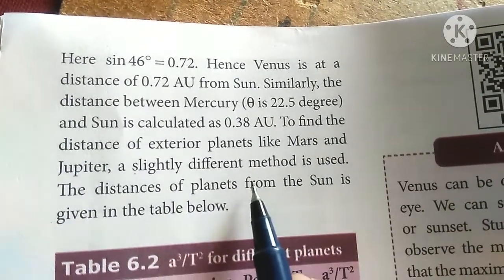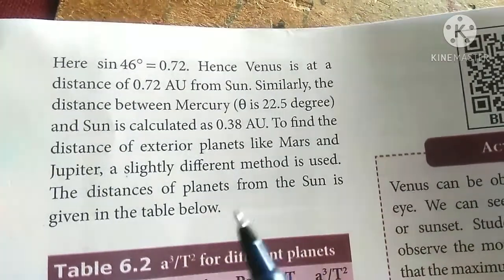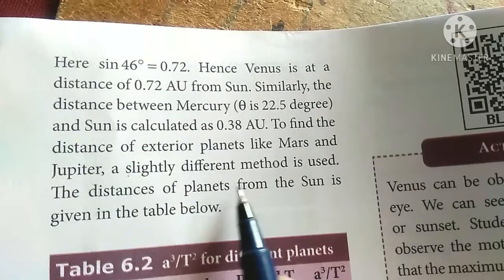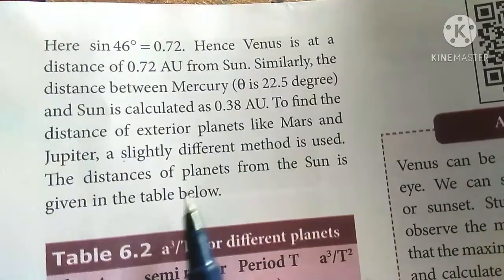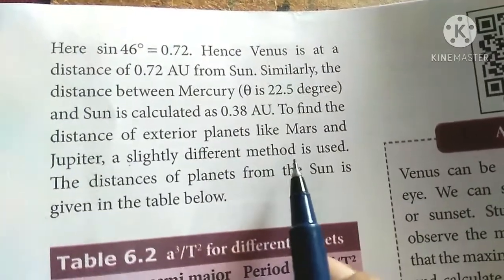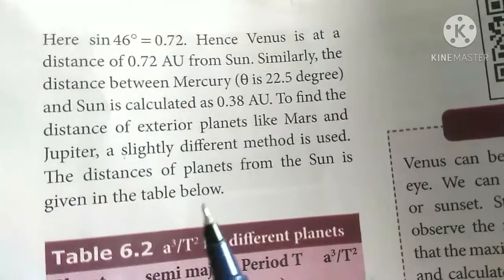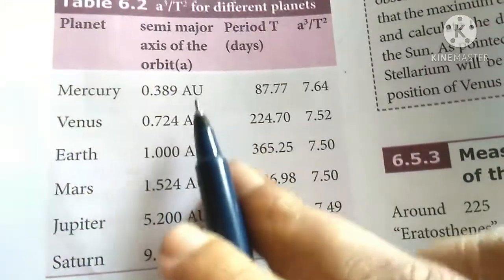We will use some different methods for exterior planets like Mars and Jupiter. A slightly different method is used. The distance of planets from the sun is given in the table.